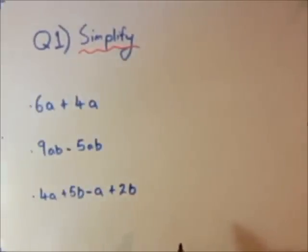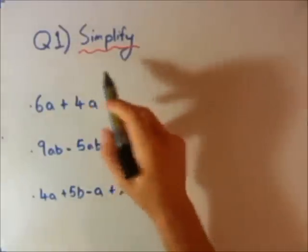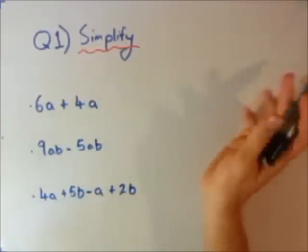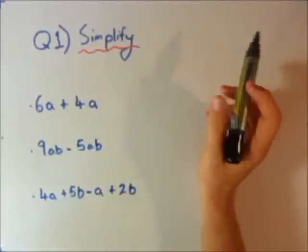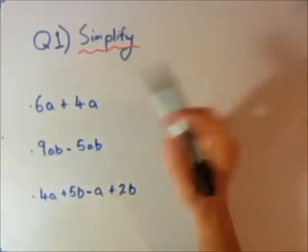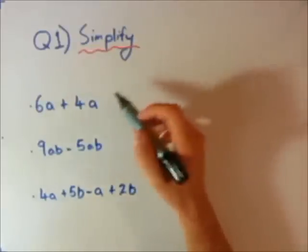Question 1. These first few questions are all revision questions from Year 9, so I'm going to go through them fairly quickly. We're looking at simplifying when you're adding or subtracting pronumerals. The key to adding and subtracting is you can only add like terms. So this one here for example, 6a plus 4a.